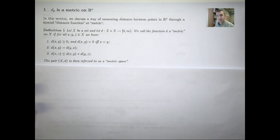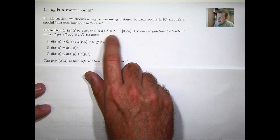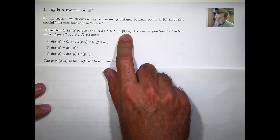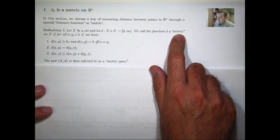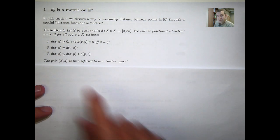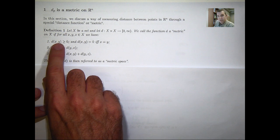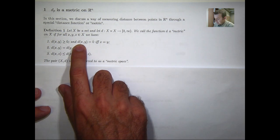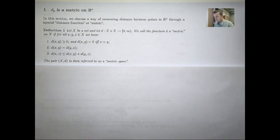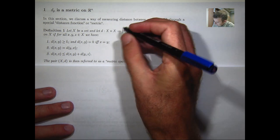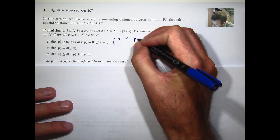Suppose X is some set — think of X as R^n or the real line — and suppose d is some function defined on X cross X that is non-negative. We call d a metric or distance function on X if for all points or elements in X, the distance between two points is always non-negative, and furthermore the distance between two points is zero if and only if x equals y. This first property is known as the metric being positive definite.